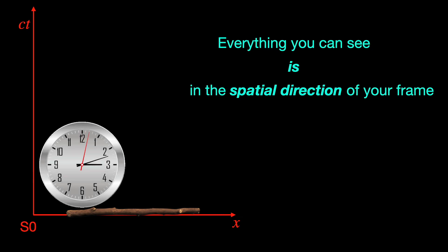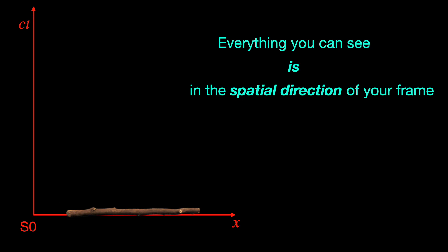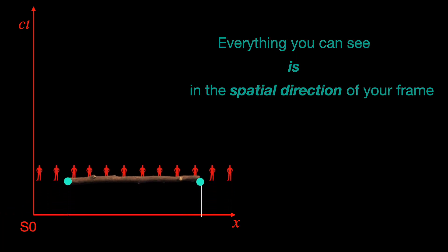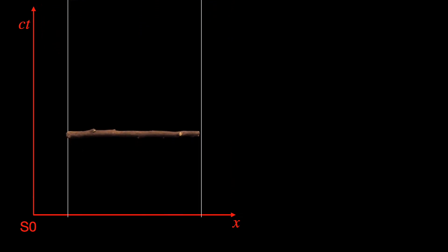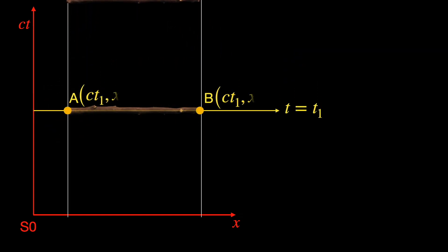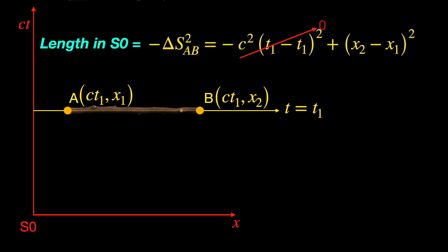Also since our S0 frame clock keeps ticking for the stick and for us, all must keep moving in the time direction. So the two end points, in fact all parts of the stick will have vertically upward world lines in our space-time diagram as the static observers like ourselves in S0 do. Coming back to the length measurement, when we observe say at time instant t₁, the two end points are events A and B with coordinates (ct₁, x₁) and (ct₁, x₂) respectively. The length we get is therefore (x₂-x₁)² which equals to let's say L₀². This is the rest length also called the proper length of the stick.